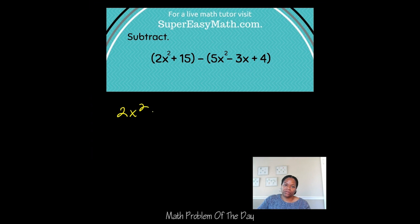So I'm going to rewrite this, except I am going to distribute that subtraction sign to all three terms in the second set of parentheses. So instead of a positive 5x squared, it's going to be a negative one, or you can think of it as subtracting it.